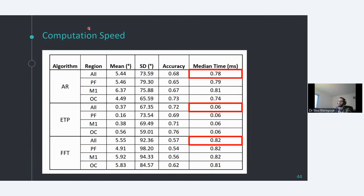Regarding computation speed: at one kilohertz sampling rate, each sample arrives every millisecond, so processing must complete in under one millisecond. The AR and FFT algorithms take around 0.8 milliseconds, which is relatively close to that limit. ETP is more than 10 times faster, meaning you don't need a fancy computer or dedicated hardware. A slow computer running AR or FFT could exceed one millisecond and fail to run in real-time.